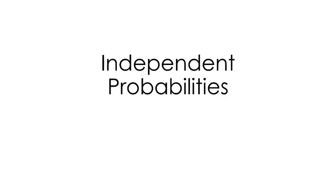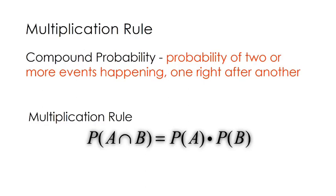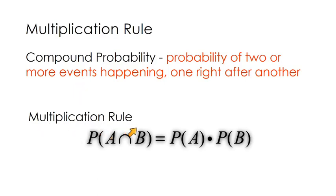In this video we're going to define and look at independent probabilities. Within compound probabilities, we're going to do independent probabilities today — that's the idea of the probability of two or more events happening. We're going to look specifically at independent probabilities and the multiplication rule. Don't be thrown off by this symbol: it just means the probability of A and B happening is equal to the probability of A times the probability of B.